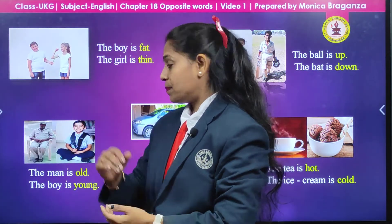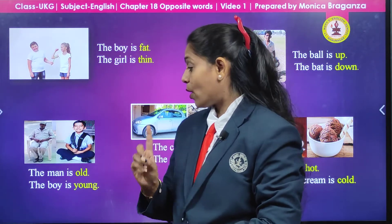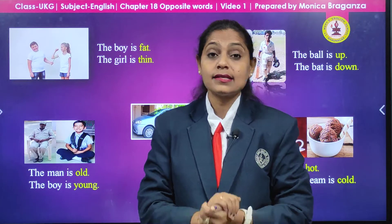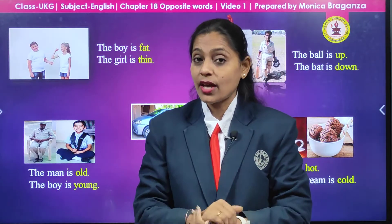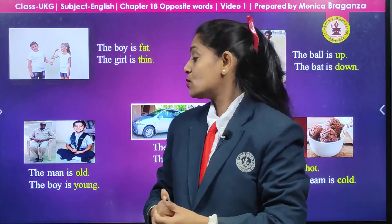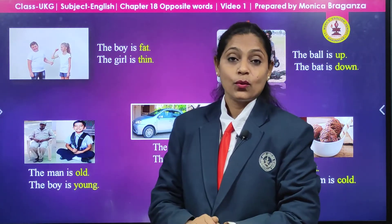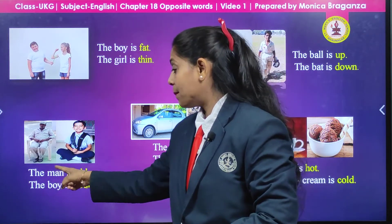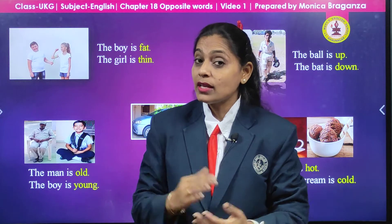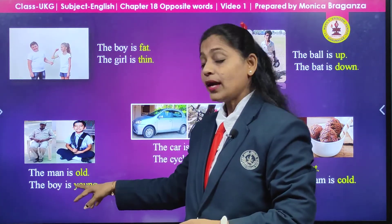Now look at the next picture — here we are having a picture of a boy and a man. Can you see that man? He is old. You are also having grandfather and grandmother at home and they are old. So what we are going to say: the man is old. Now the boy — the boy is young like you all. So we are going to say: the boy is young.